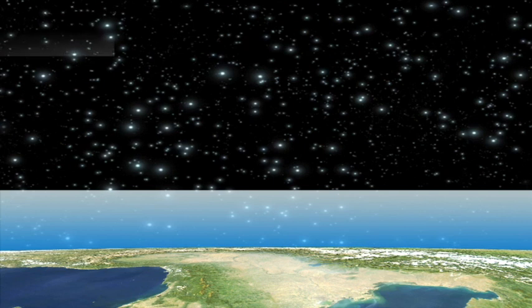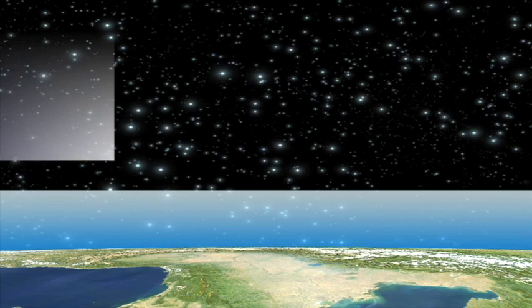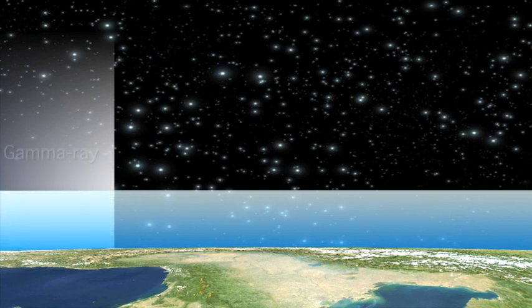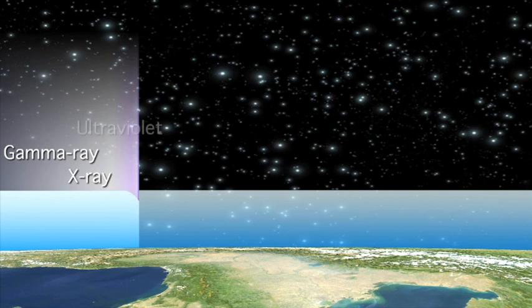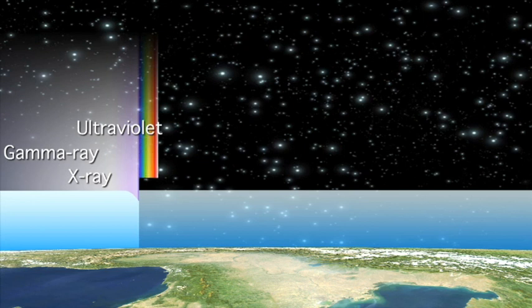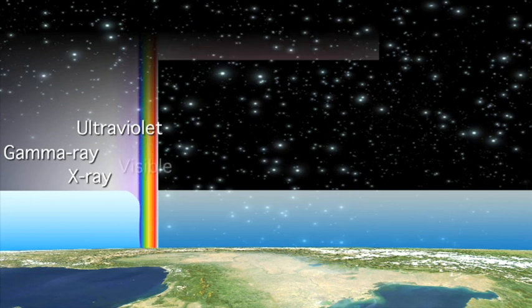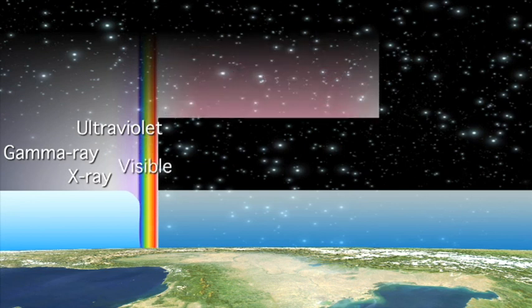Fortunately for life on Earth, the dangerous high-energy gamma and X-rays are absorbed by oxygen and nitrogen in the upper atmosphere. Most ultraviolet wavelengths are absorbed by oxygen and ozone molecules in the upper atmosphere and stratosphere, although a few very specific wavelengths do make it through. It's obvious that most visible light can travel through the atmosphere, and so can near-infrared radiation.